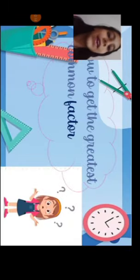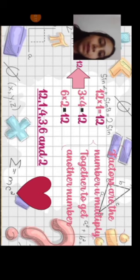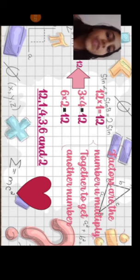First, how to get the greatest common factor. What are factors? Factors are the numbers you multiply together to get another number.